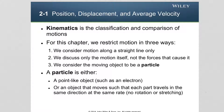Even if the object has a finite size, we are going to consider the motion of this object as the motion of a particle with the same mass. A particle is defined as either a point-like object, such as an electron, or an object that moves such that each part travels in the same direction at the same rate — so there is no rotation or stretching.